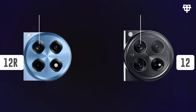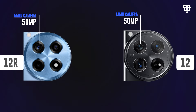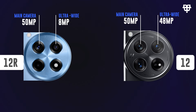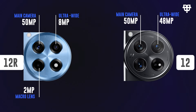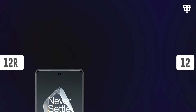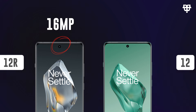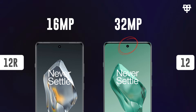When it comes to the camera setup, there are a few differences worth noting. Both the OnePlus 12R and OnePlus 12 feature a 50 megapixel main camera, but the 12R's ultrawide camera is 8 megapixels while the OnePlus 12 boasts a 48 megapixel ultrawide. Additionally, the OnePlus 12R has a 2 megapixel macro lens, whereas the OnePlus 12 steps it up with a 64 megapixel 3x periscope telephoto lens. Front camera wise, the OnePlus 12R sports a 16 megapixel lens while the OnePlus 12 has a 32 megapixel front shooter.